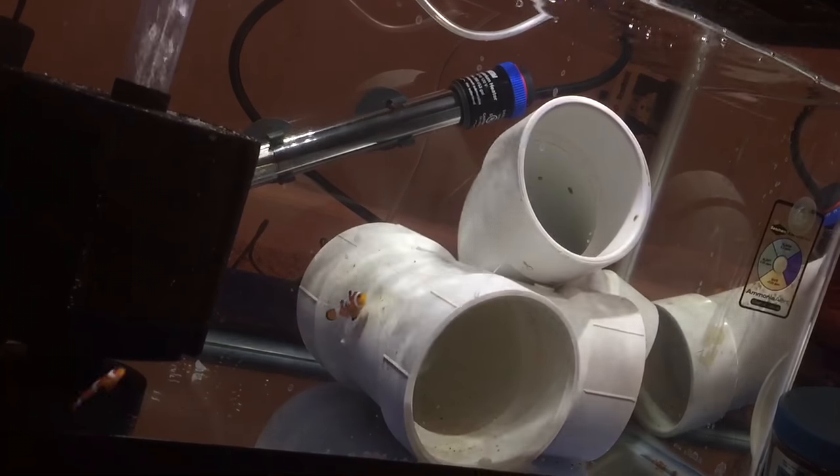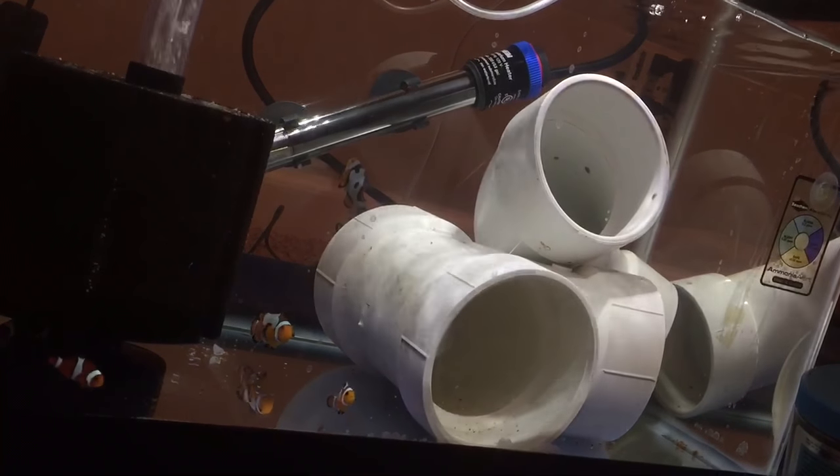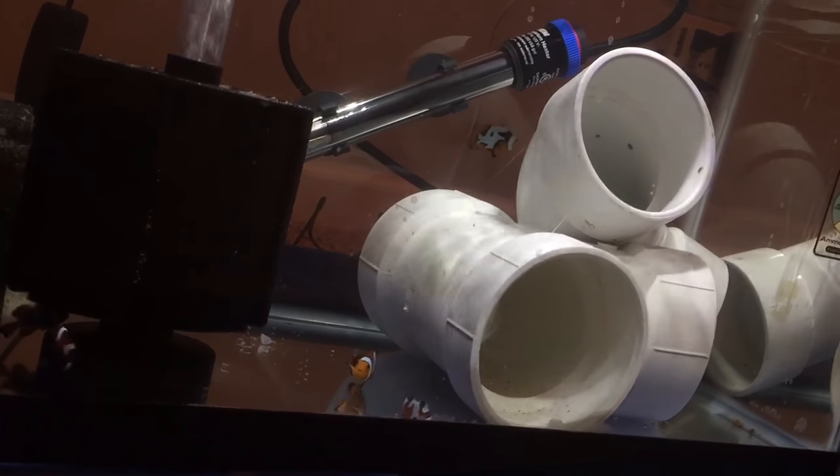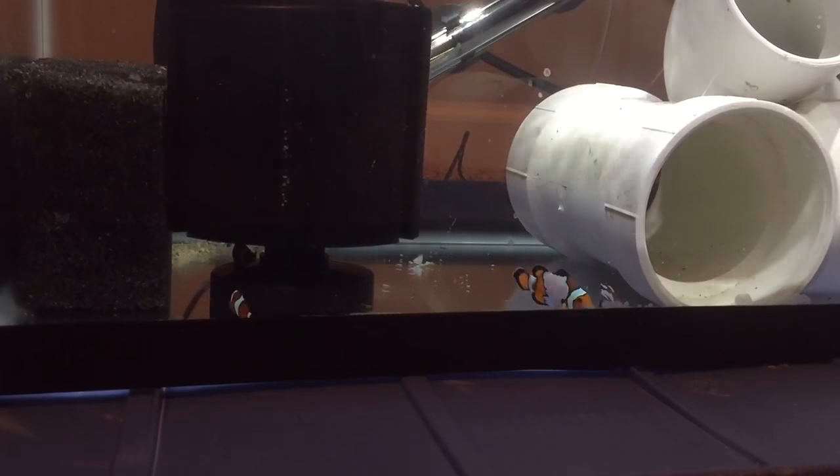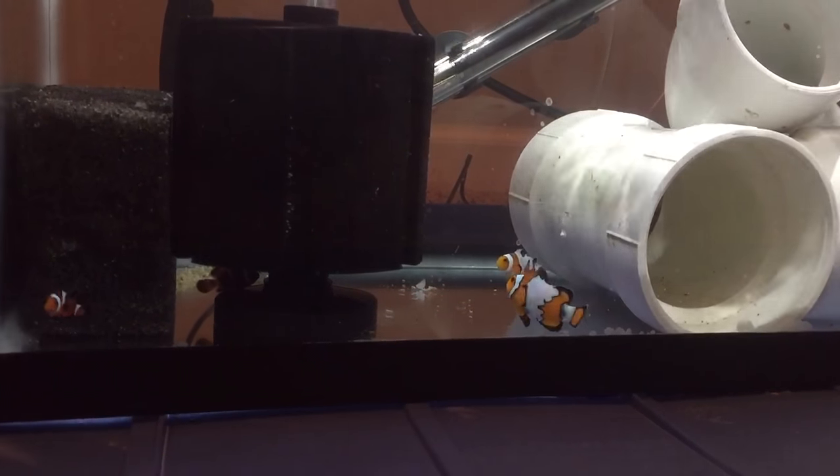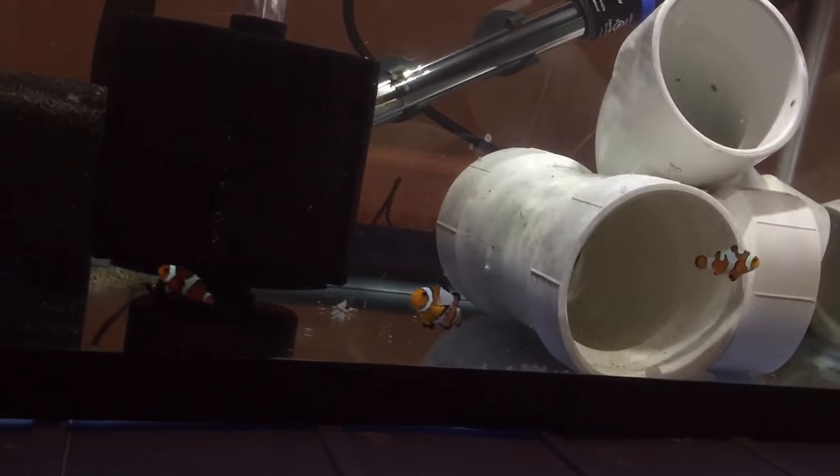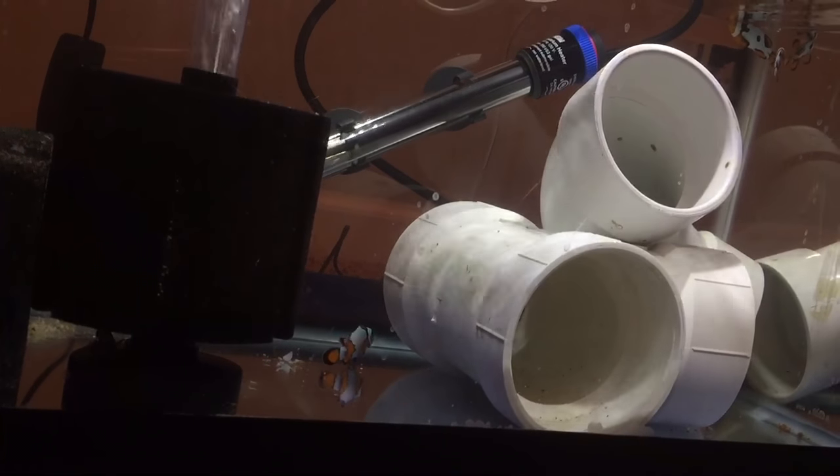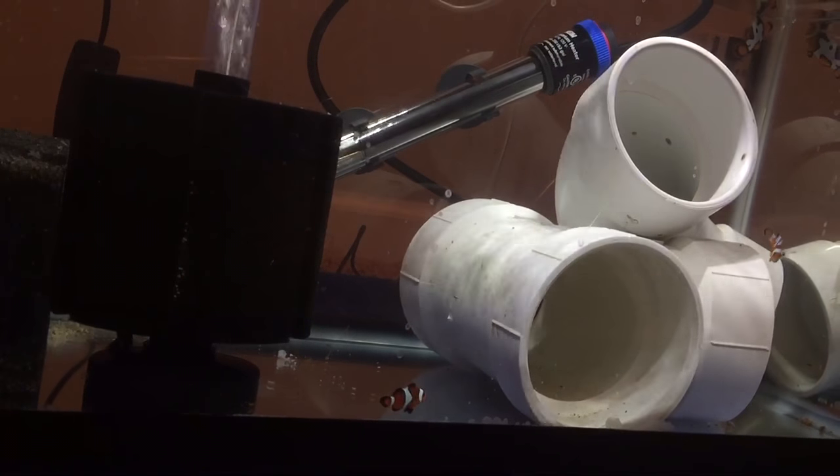They will not be affected much by the copper, but when I dose the copper I dose 50% of what Seachem says. Because if you dose what they say you are really coming close to the toxic level and fish will die quickly. And if they don't die they'll become damaged to the point where you cannot save them from copper poisoning. It is toxic to fish.